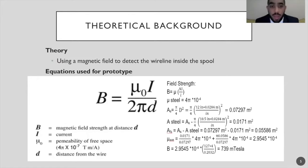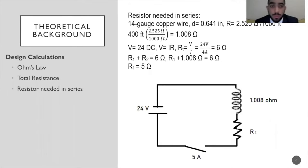To continue the theoretical background, we have the equation for total resistance and resistor needed in the series. We're using 14 gauge copper wire. You can see in the small graph the 24 volt and the coil connected in series with the resistance.